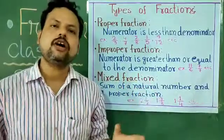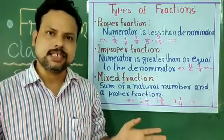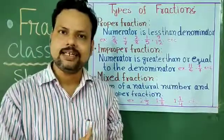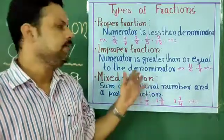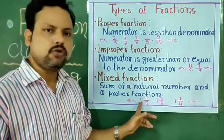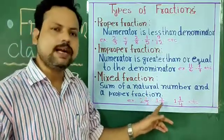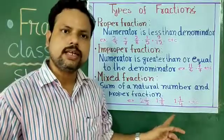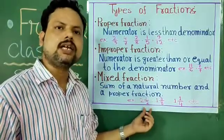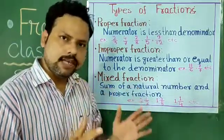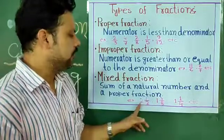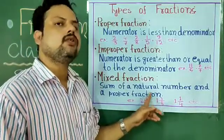Mixed fraction, or mixed numeral, or mixed number — anything we can say. It is a sum of a natural number and a proper fraction. We will call it mixed numeral. For example: 2 whole 1 by 2, 1 whole 3 by 8, 1 whole 1 by 4. Everywhere some natural number is there — it indicates the whole part — and 1 by 2 indicates the proper fraction. Always a proper fraction and a whole number will be there, with natural number included.